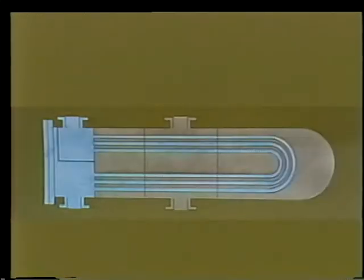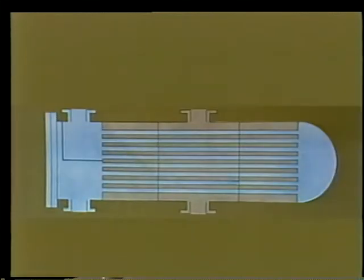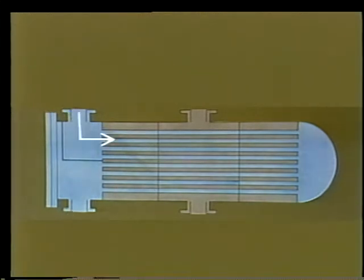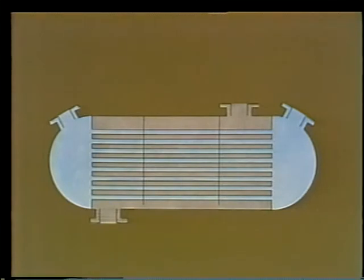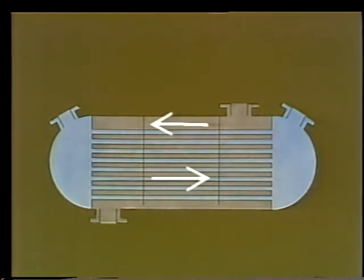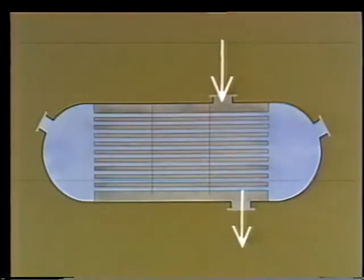The tube arrangement may be straight tube or U-tube. A straight tube exchanger might be a multi-pass unit if the head at one end is divided into two water boxes, one for inlet and one for outlet. The flow through a shell and tube exchanger with a straight tube single pass arrangement can be parallel flow, reverse flow called counter flow, or cross flow.